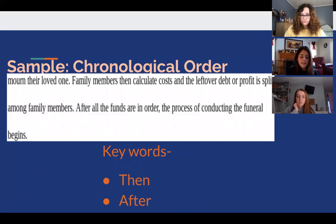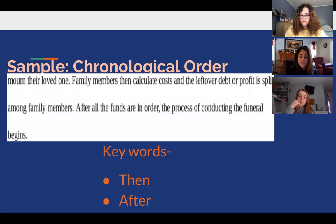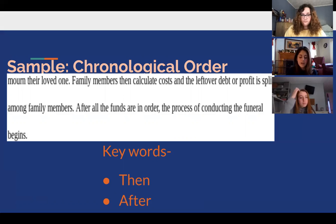In this part of our essay, we utilize chronological order to describe the process of obtaining funds to pay for a funeral in Ghana. Keywords such as 'then' and 'after' clearly demonstrate the use of chronological order, which as previously discussed is a reputable way to organize a process essay. Quality organization is vital for an essay to be sophisticated and adequate.